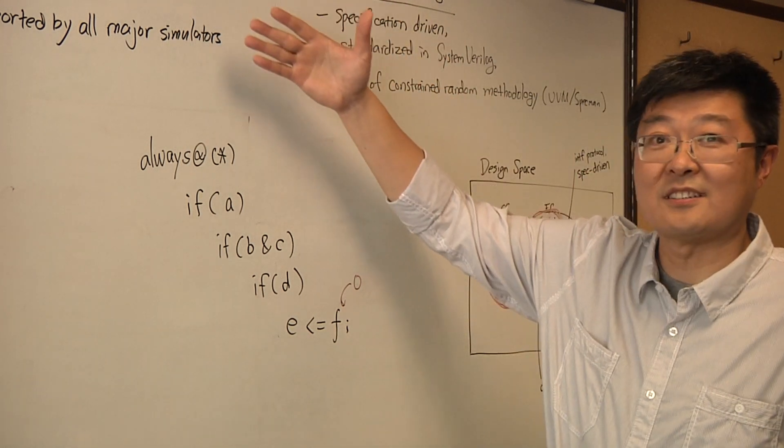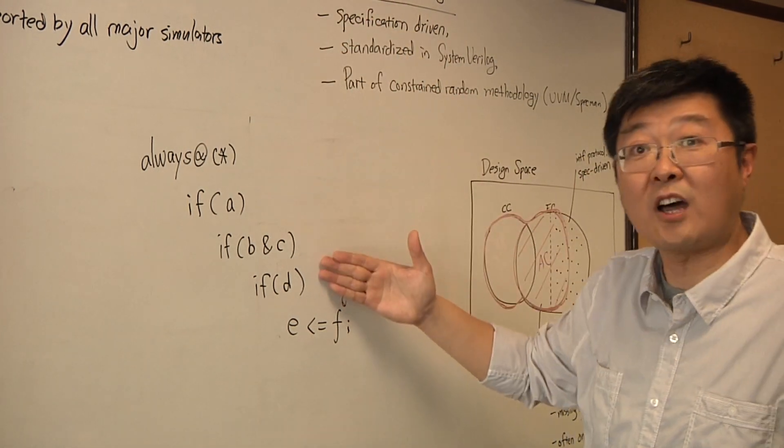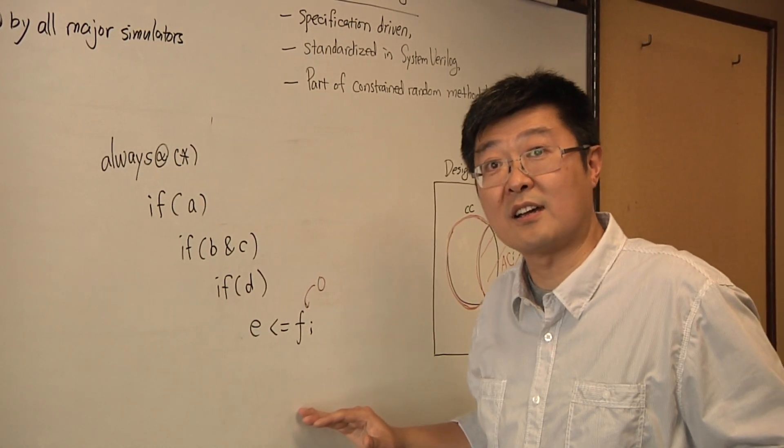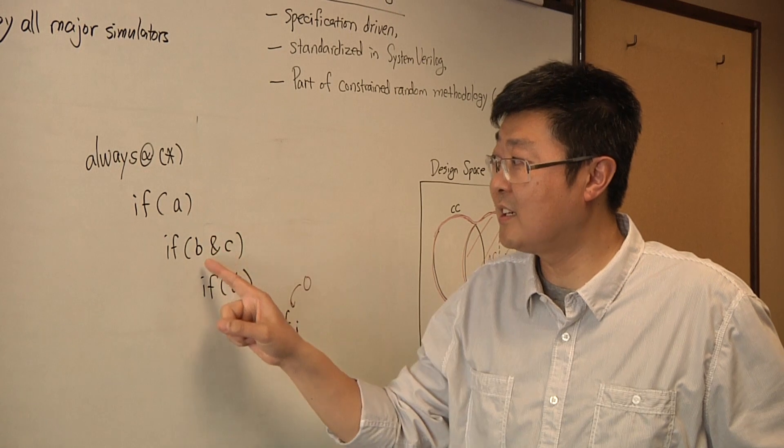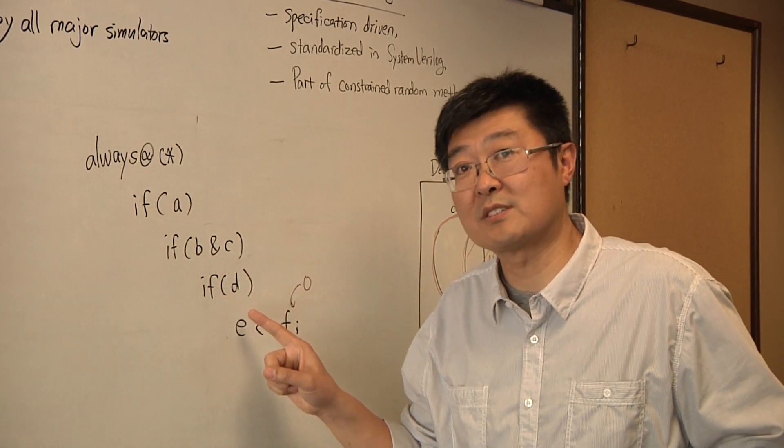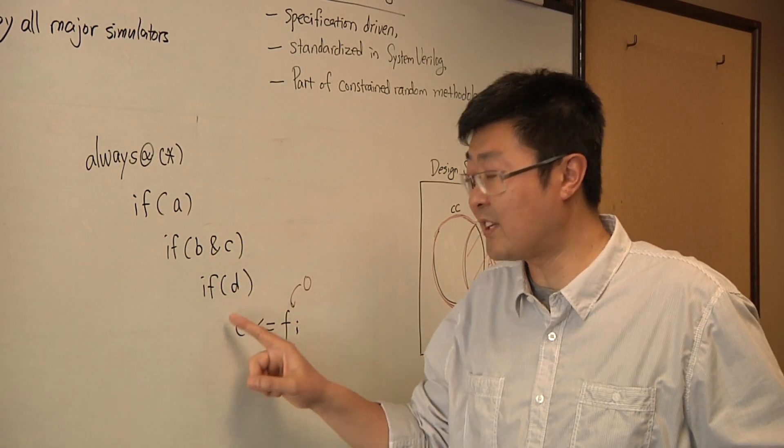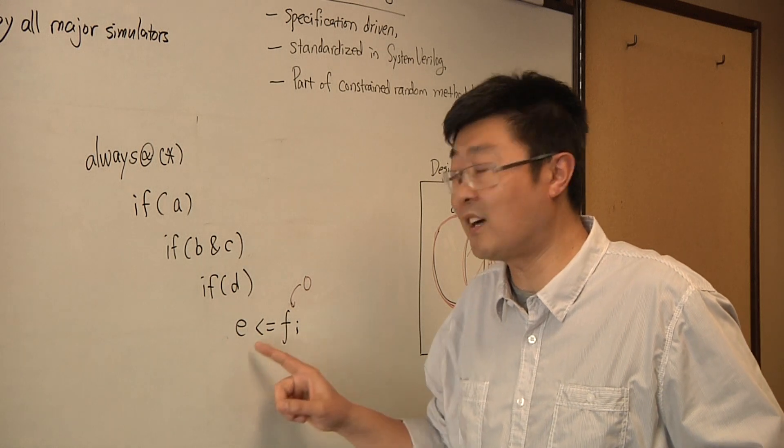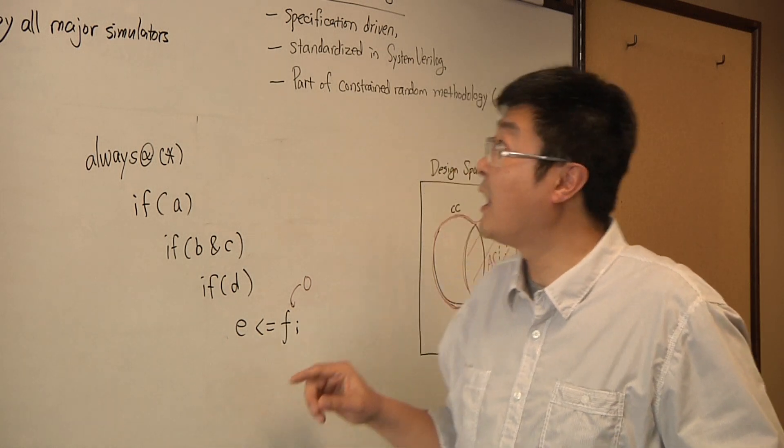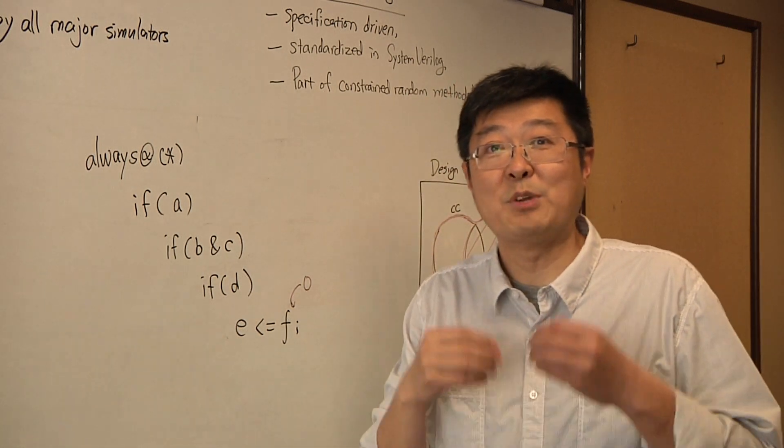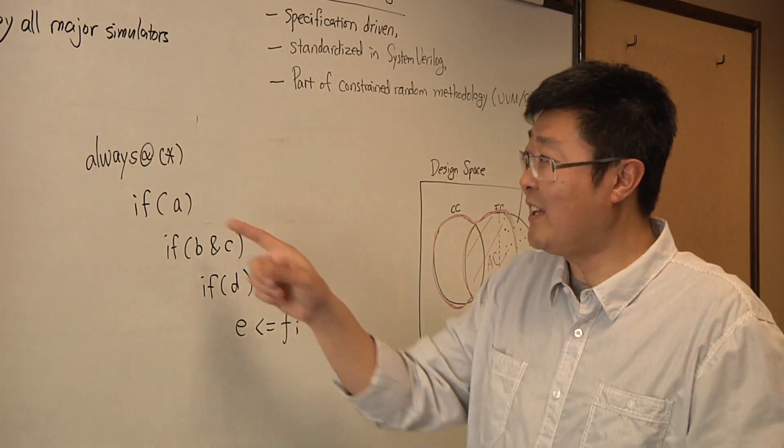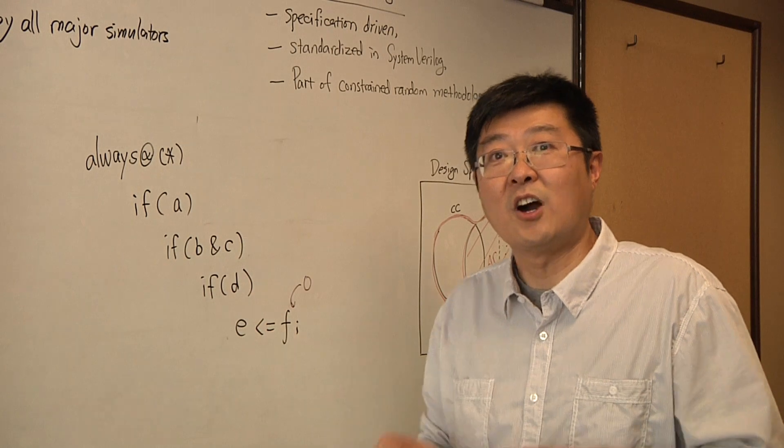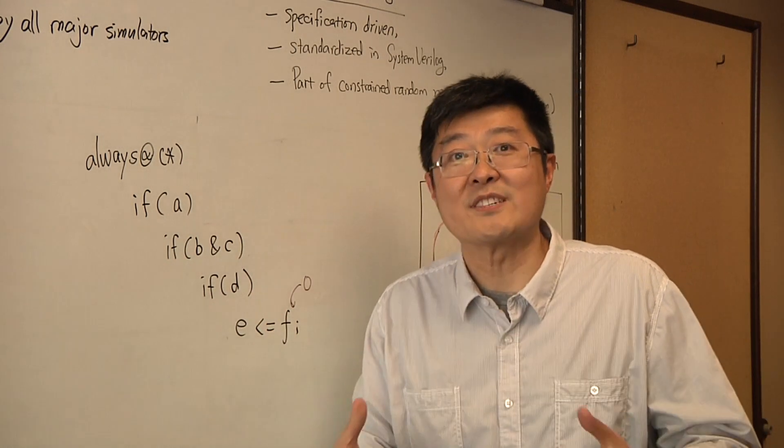In code coverage, as of today, code coverage does not report this scenario because code coverage already has the case where I cover a, b, c, d are both ones. But you never look at this part of logic, that I assign a constant to e. Functional coverage will require people to think through every single combination. Really, there are many conditions here. Oftentimes, you miss at a high level.